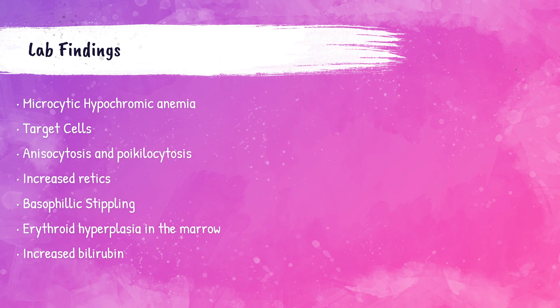The patient can also have increased reticulocytes due to the bone marrow trying to compensate and produce more red blood cells, to account for the red cells that aren't working right because the hemoglobin is going to be affected. There will also be an increase in bilirubin because of the abnormal red cells being prematurely destroyed. The bone marrow will have erythroid hyperplasia, meaning it will be saturated with erythroid precursors trying to compensate for this abnormal red cell hemoglobin process.